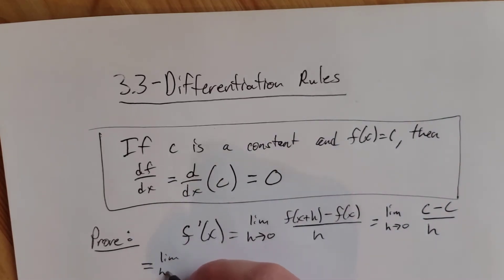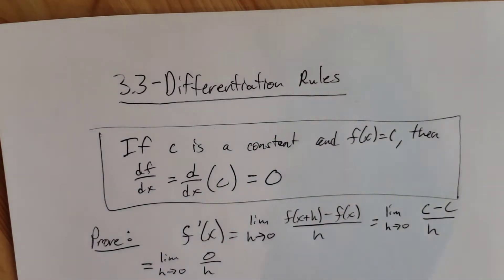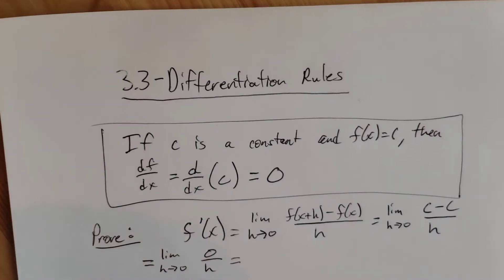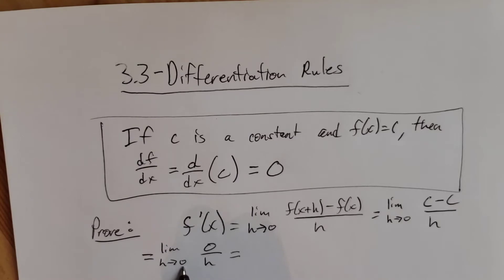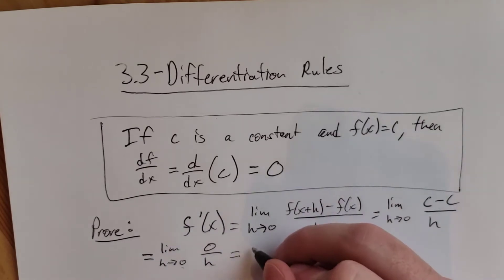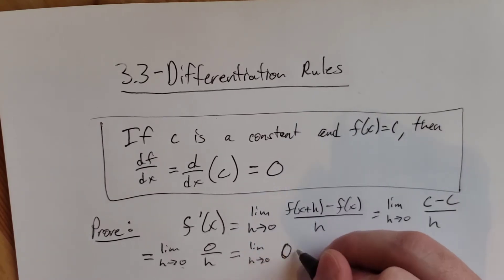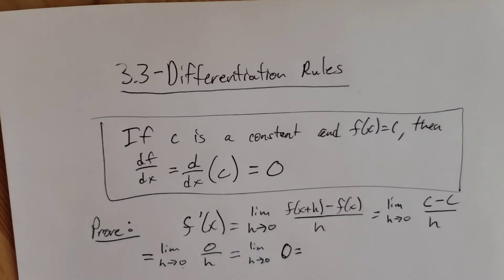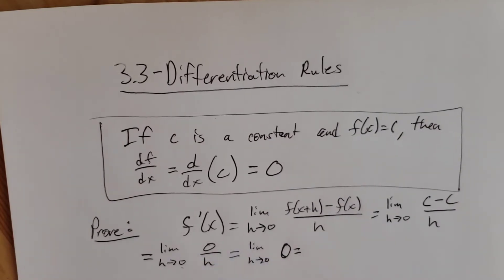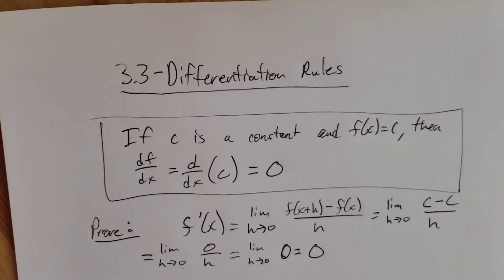That is equal to the limit as h goes to zero of zero over h. For limits, we don't care what happens at h equals zero. The function zero over h is equivalent to just the zero function everywhere except h equals zero, so these two limits are the same. And the limit as h goes to zero of a constant is just that constant, so we get zero.